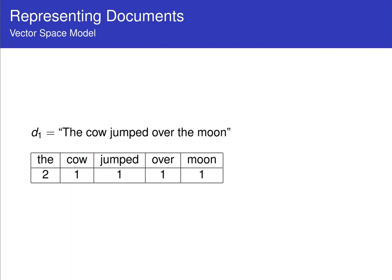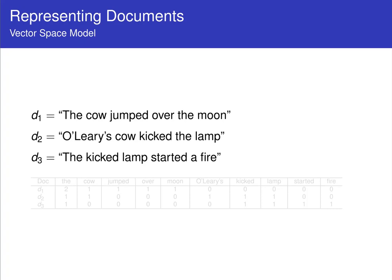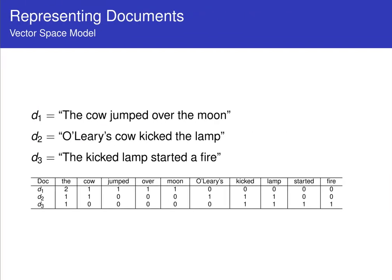Now, the question comes in is, how do you represent more than one document? Well, let's say we have three documents here. The cow jumped over the moon, O'Leary's cow kicked the lamp, and the kicked lamp started a fire. So the first thing that we want to do here is to find out which are the unique words. So if we're going to put a bag of words with the words for document 1, 2, and 3 together in one bag, we'll have the word the, cow jumped over, moon, O'Leary's, kicked, lamp started a fire. Those are the unique words. So then I build my little matrix, like so.